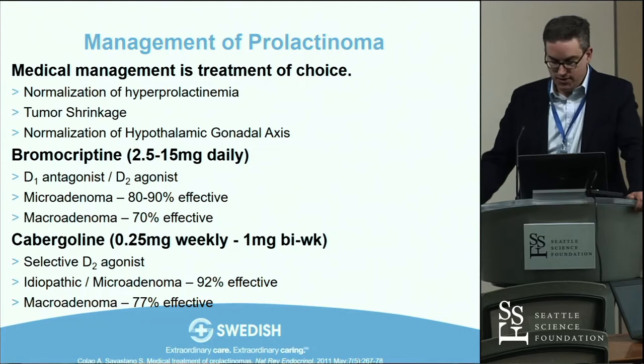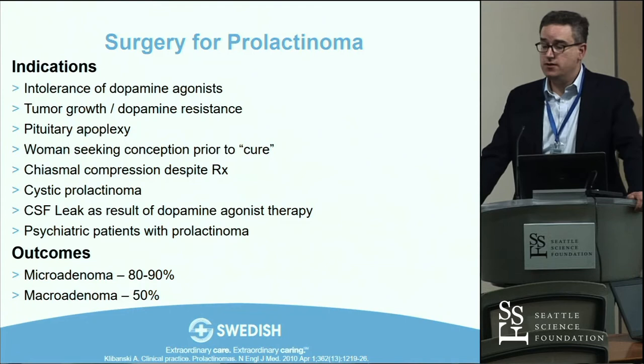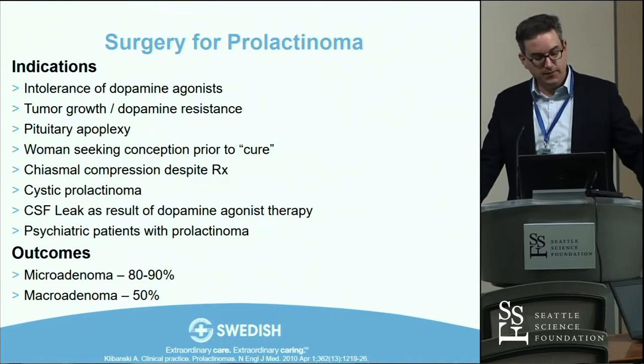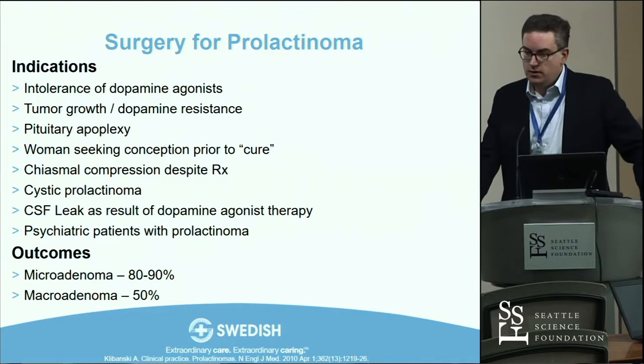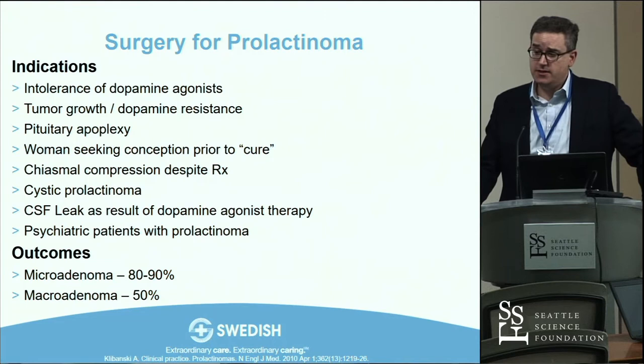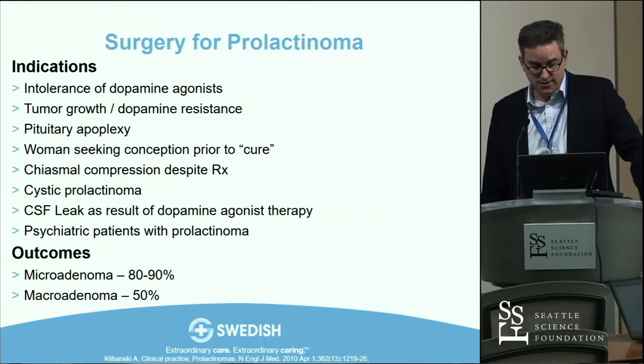We consider surgery for patients intolerant of dopamine agonists — some get orthostatic hypotension or severe GI upset. Pituitary apoplexy with acute optic compromise is an indication to operate. Women wishing to restore fertility prior to cure, cystic prolactinomas, patients who develop a CSF leak as the tumor shrinks with therapy, and psychiatric patients who cannot take D2 agonists are also surgical candidates.